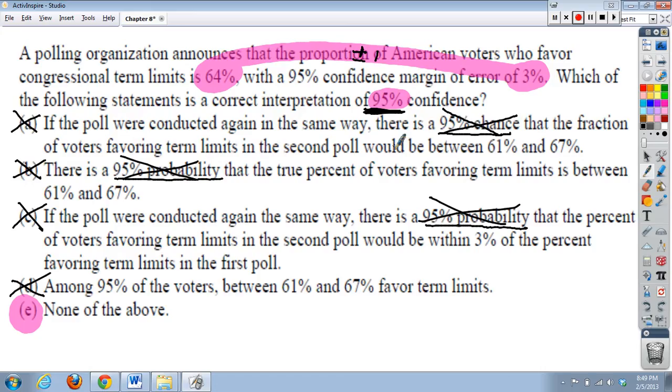Now, the interpretation of the 95% is this, that if we were to take many, many random samples from our population, that approximately 95% of them would capture the true proportion of American voters who favor congressional term limits. That would be the correct interpretation of the 95% confidence level.